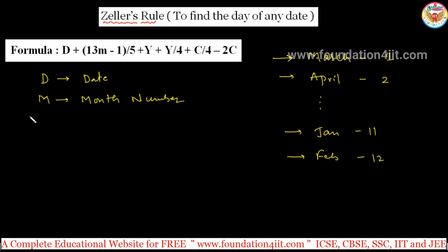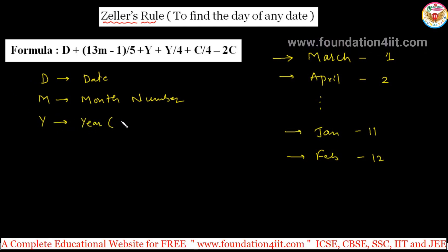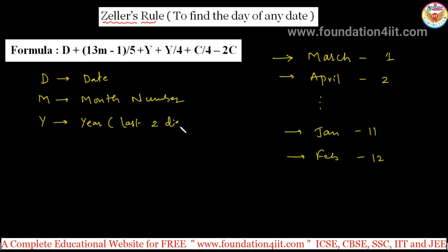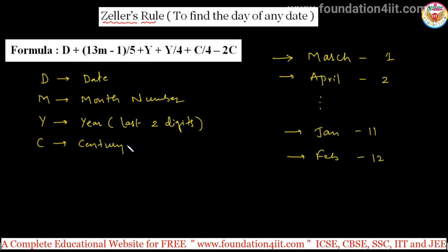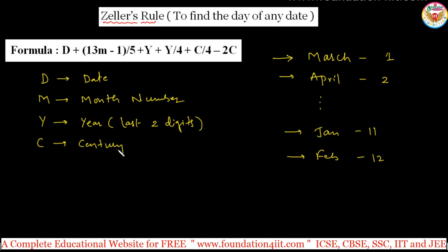m is the month number. y is the year — specifically the last two digits. For example, if the year is 1982, you take only 82. c is the century — the first two digits of the year. For 2014 it is 20, for 1946 it is 19, for 2024 it is 20. So remember: d, m, y, c.